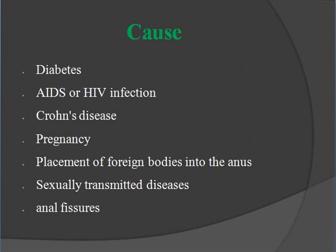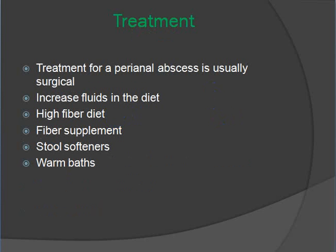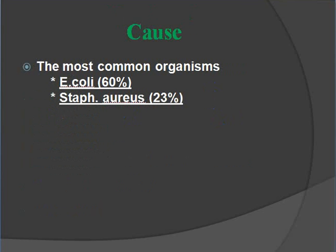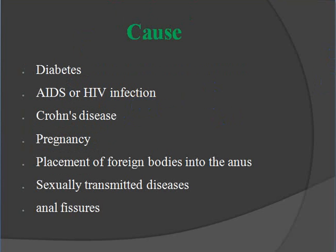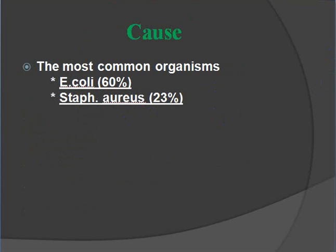Causes of perianal abscess include: diabetes, AIDS or HIV infection, Crohn's disease, pregnancy, placement of foreign bodies in the anus, sexually transmitted disease, and anal fissures. The most common causative organism is E. coli and Streptococcus species.